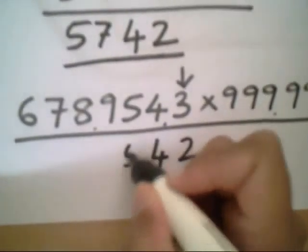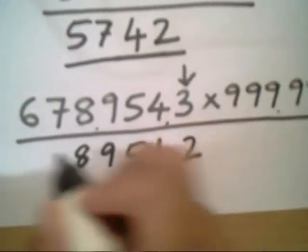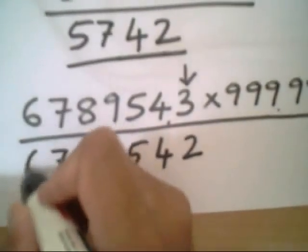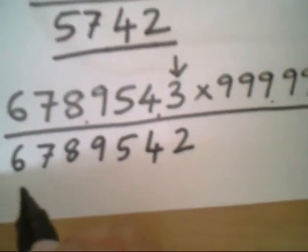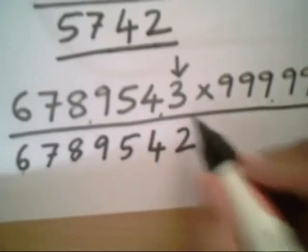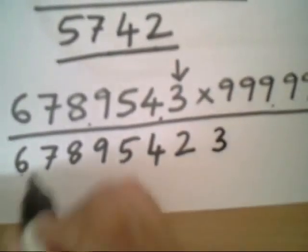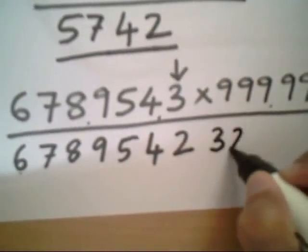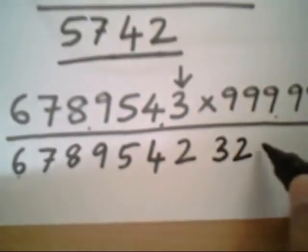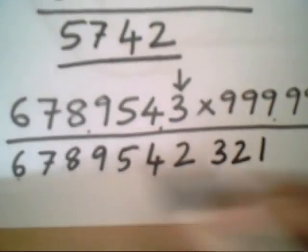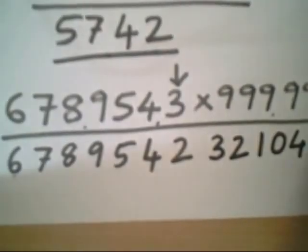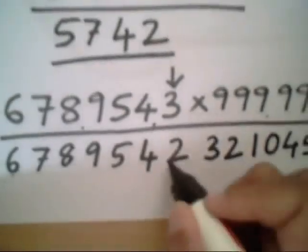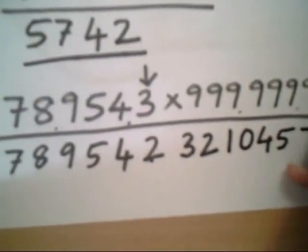Now all these numbers are subtracted from 9. See what happens: that is 9 minus 6 is 3, 9 minus 7 is 2, 9 minus 8 is 1, 9 minus 9 is 0, 9 minus 5 is 4, 9 minus 4 is 5, and 9 minus 2 is 7.